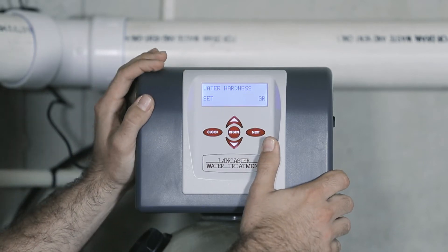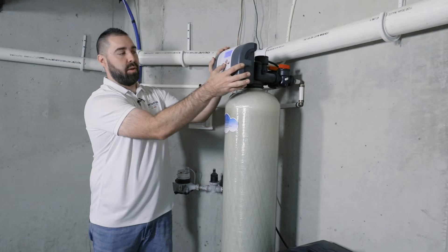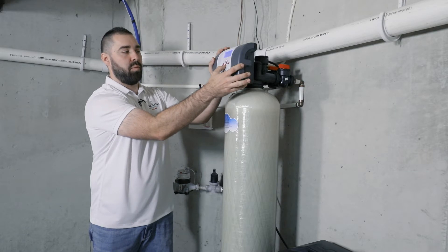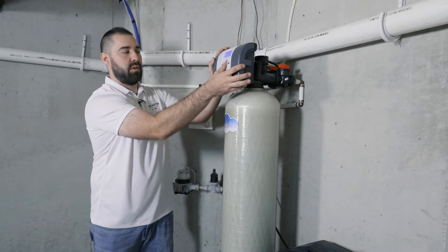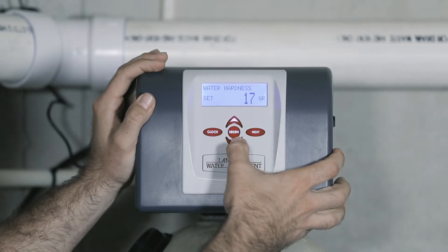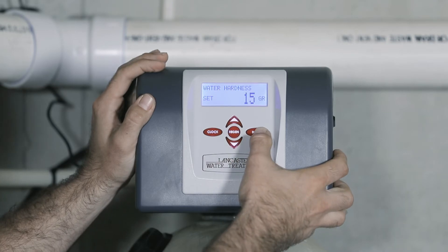It should read water hardness with a number flashing. Use the up and down arrows to input what your water is untreated. Press next.